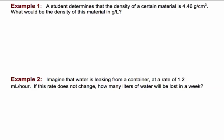Let's practice some dimensional analysis. In example number one, we know that our density is 4.46 grams per centimeters cubed. We're asked, what would the density of this material be in grams per liter?